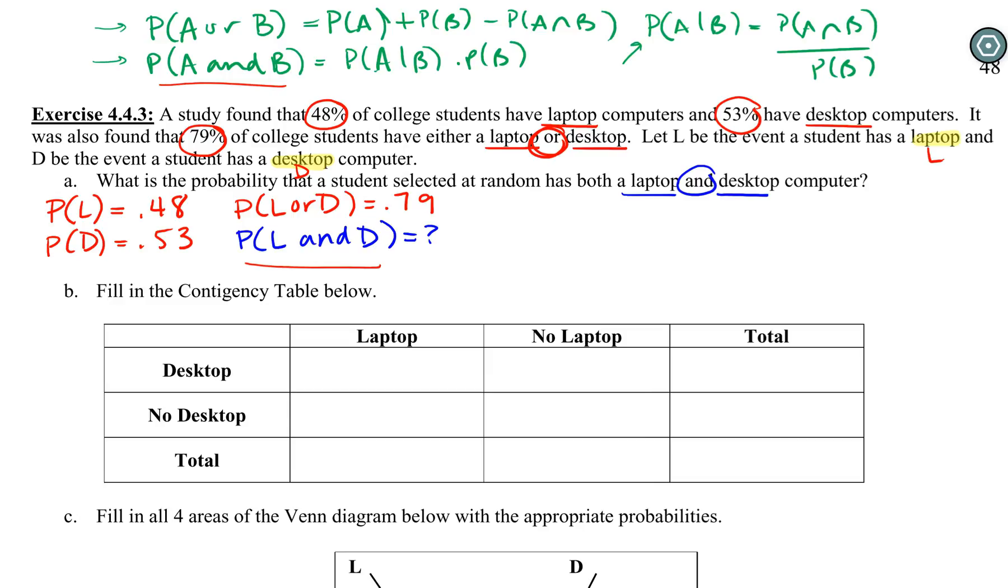The first instinct would be using the and formula because we're looking for an and. However, the and formula requires that we have a conditional, which we do not. One of the most common mistakes I would see on this question was students mistakenly using the formula for independent events and just multiplying their L and D together, which would be very wrong. We have nothing here to tell us these events are independent, so we have to use the general formula. We can't use the conditional formula because it has an and in it. The only option is our or formula, which works out well because we do have an or.